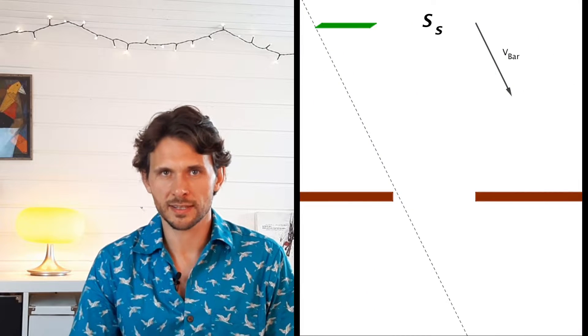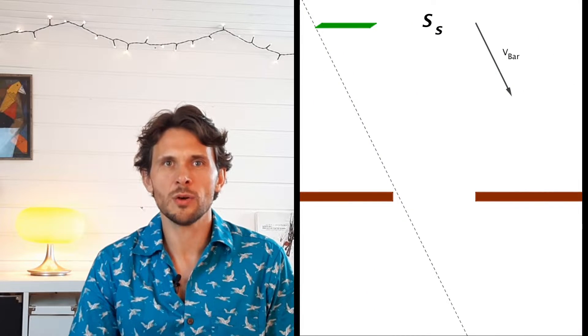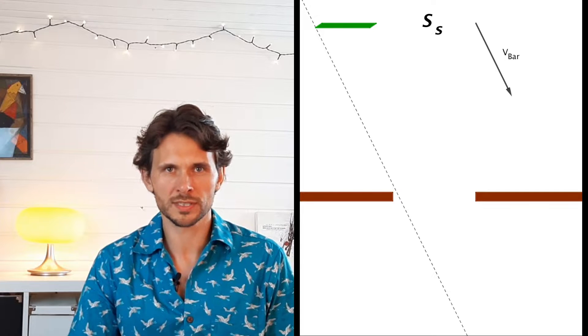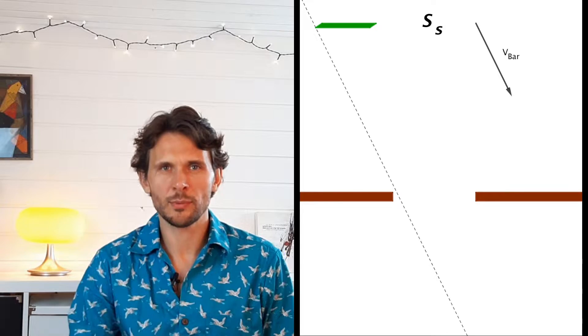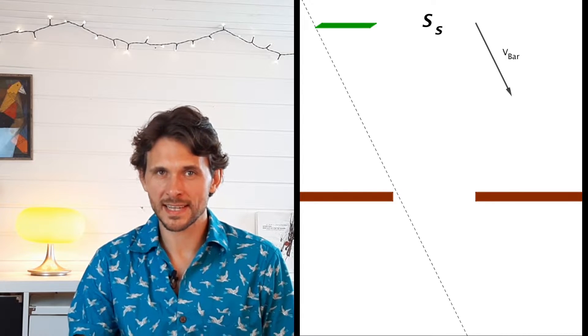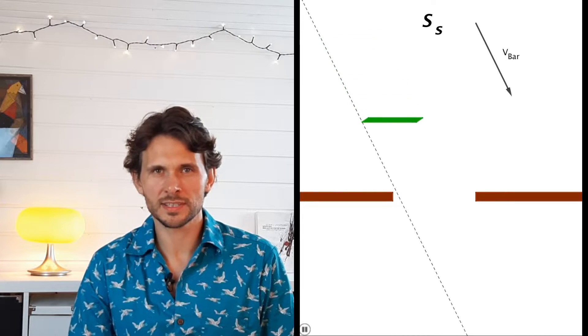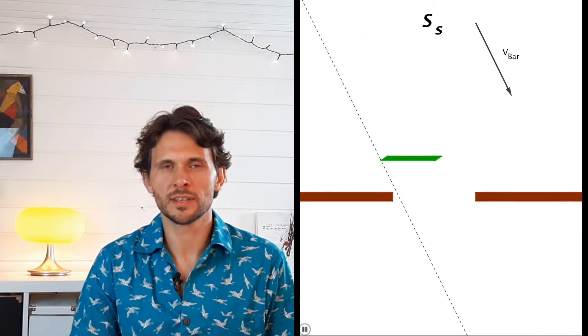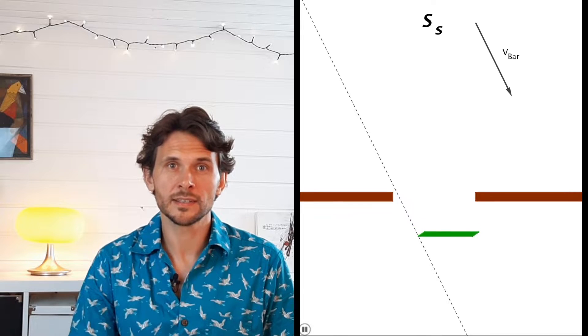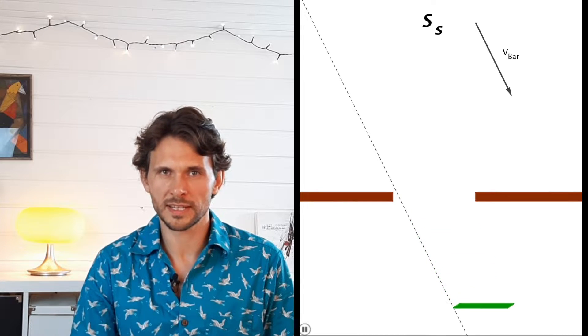Clearly the bar went through the slit with no collision, as we expected. If we now shift to the perspective of the slit, we will see that the slit is at rest and that the bar is now moving diagonally toward the slit. I will denote this reference frame SS, as it is the rest frame of the slit. As we see in the next animation, the bar is still length contracted and will easily pass through the slit. So far so good.